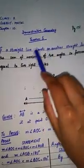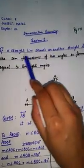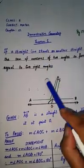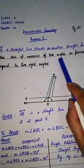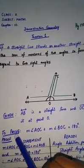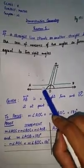So this divides the statement into two parts. The first part, if a straight line stands on another straight line, is the given of the theorem. And the black one is said to be the proof, and that I will discuss with you in a minute.